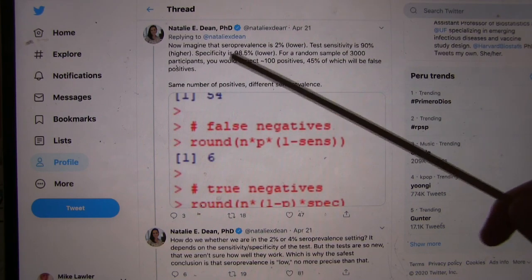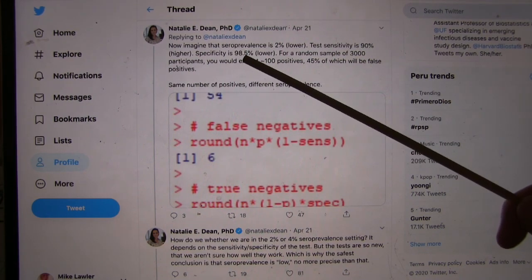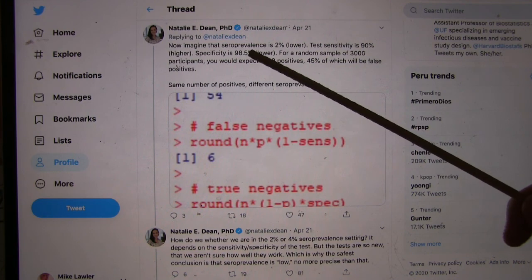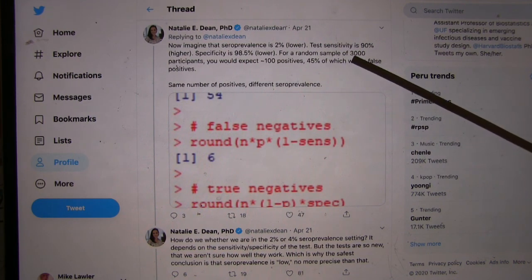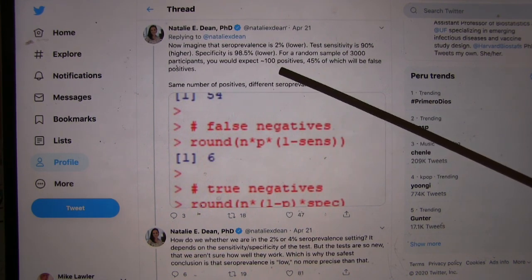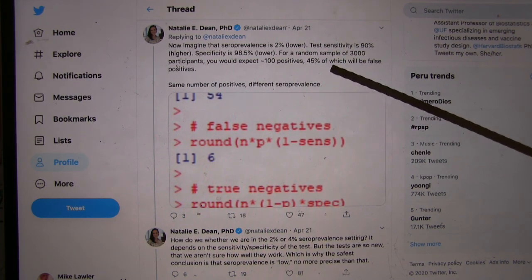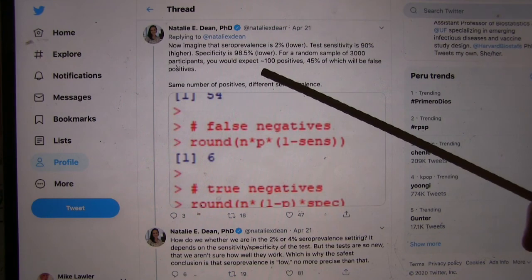Last time it was 80. Specificity is lower, 98.5% versus 99. For a random sample of 3,000 participants, you would expect to find 100 positives. So about the same? 45% of which will be false positives. That's a lot different.